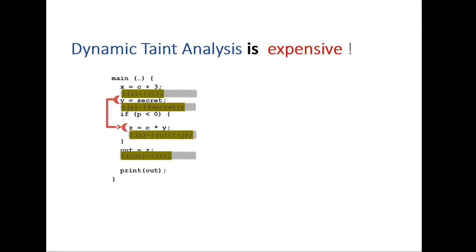If you pay attention to this piece of code, you can see the important parts actually are these three lines. So, y equal to secret, then z is equal to c multiply y and out equal to c.